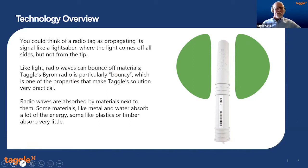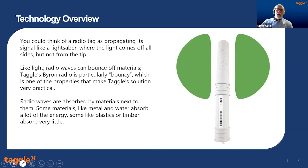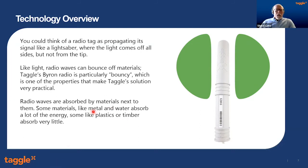Radio waves are absorbed by materials next to them. Things like metal and water absorb lots of the energy. We're talking about low energy devices here: 25 milliwatts for our low power tags and 500 milliwatts for our high power tags. Your mobile phone is one watt, so we're not even as powerful as a mobile phone. We want to avoid things like metal and water. Plastics and timber absorb very little, although wet timber and wet plastics are not so good.